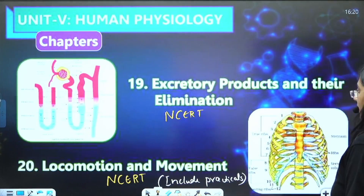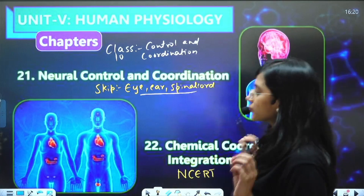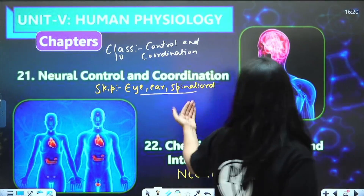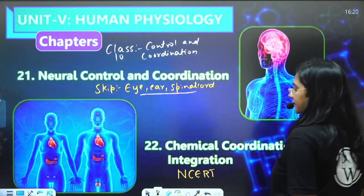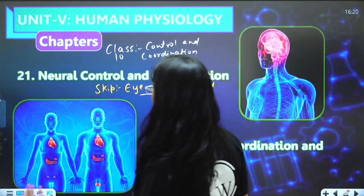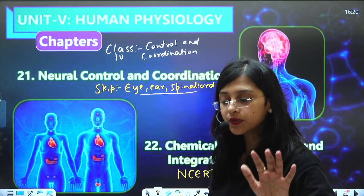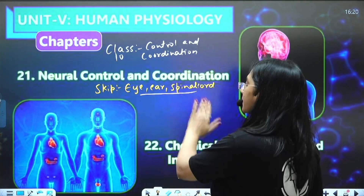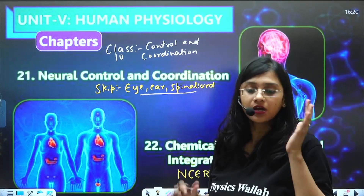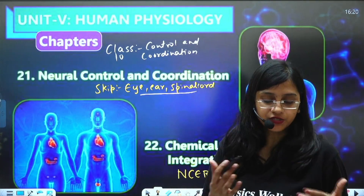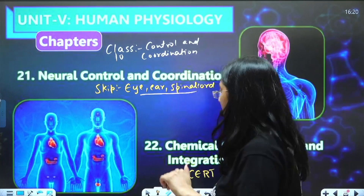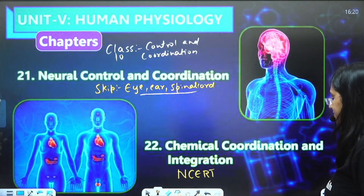For Locomotion and Movement, along with any NCERT, also study the practical part from the practical book. For Neural Control and Coordination, if using old NCERT, skip eyes, ear, and reflex arc/reflex action. If you find this chapter or the next difficult, study Control and Coordination from Class 10, which also covers coordination in plants and will help with other chapters.